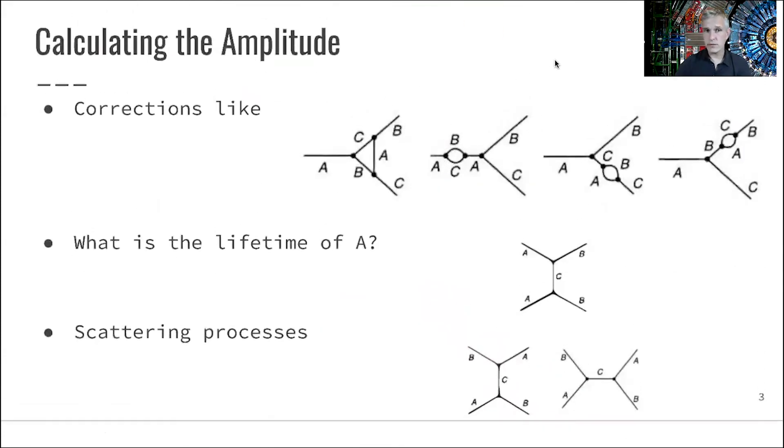We might also have corrections involved here, as shown here. And what we're interested in is now, for example, calculating the lifetime of this particle A. We might do this just for this primitive vertex, or we might do this for this complicated set of corrections. You might also be interested in calculating scattering processes, where particle A scatters with particle A and produces particle B and particle B, or we scatter particle A with particle B, and so on.